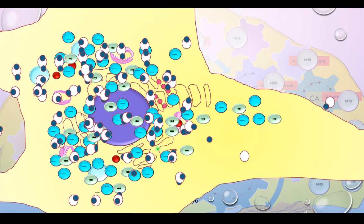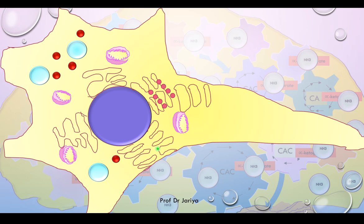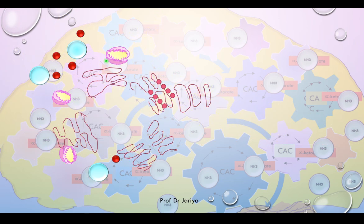Finally, cell death is caused due to the opening of the mitochondrial transition pore by excess glutamine. Here you can see the mitochondria, and the opening of the transition pores in the mitochondria due to glutamine is a signal for cell death, so the cell is going to die.